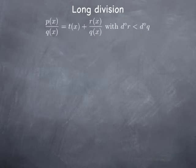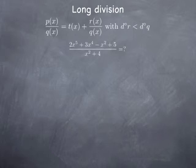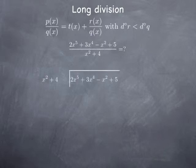Before applying this to examples to find slant asymptotes, let's go over an example of long division where the degree of t is going to be more than one, just to review the algorithm for long division. We want to divide 2x to the fifth plus 3x to the fourth minus x squared plus 5 by x squared plus 4.